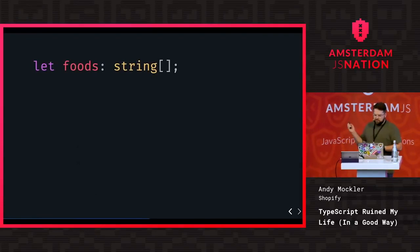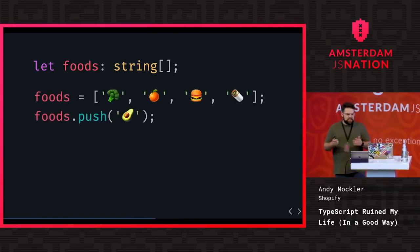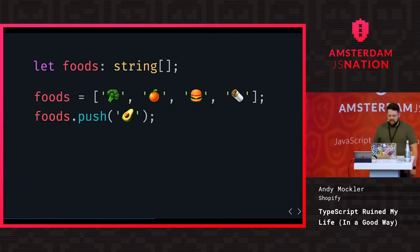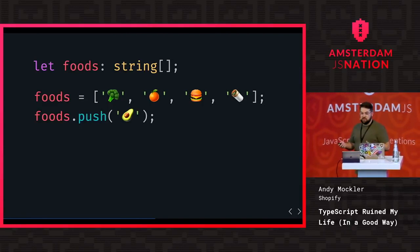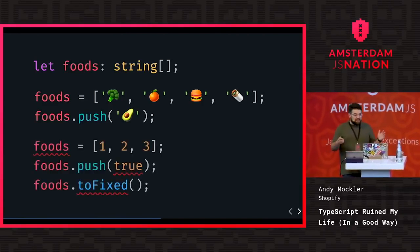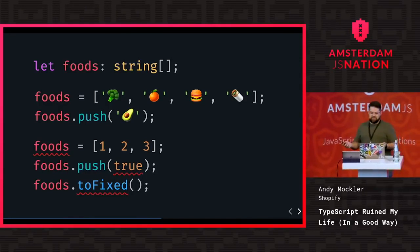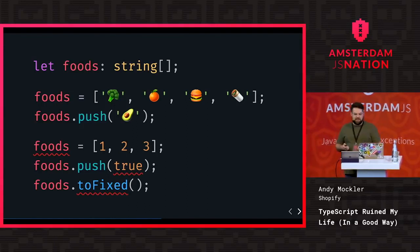For arrays, you can do a very similar thing. I have this foods variable — I can assign it a list of emoji strings. When I do this assignment it's happy, and when I call push it's happy. But if I try to assign it to a list of numbers, push in a boolean, or call a method that doesn't exist on an array, it's going to help me notice that and throw an error.